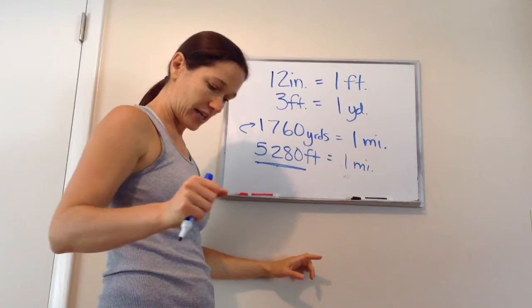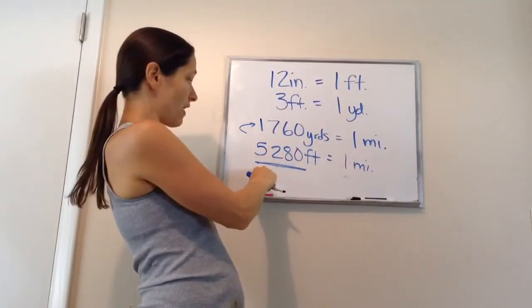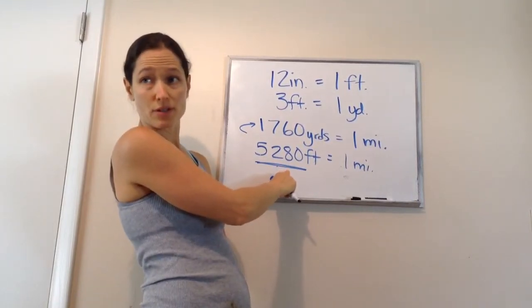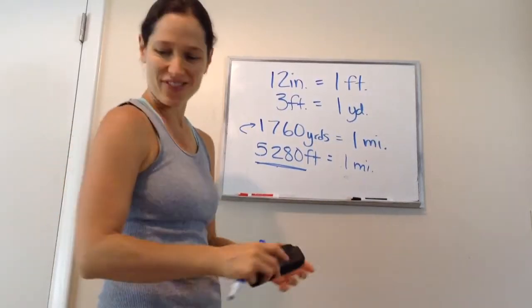That really is taking a ruler and placing one after another, after another, after another, 5,280 times to equal 1 mile. That's a lot of rulers or a lot of feet.